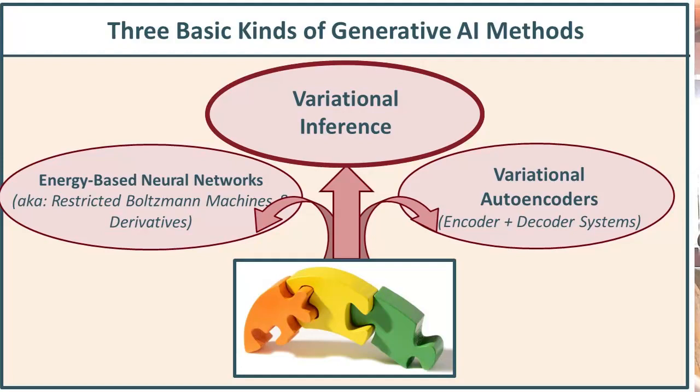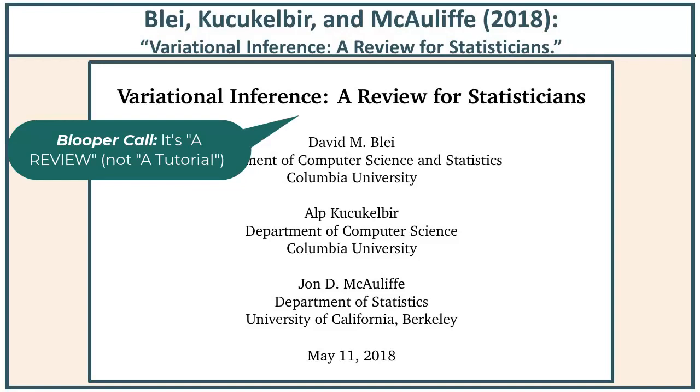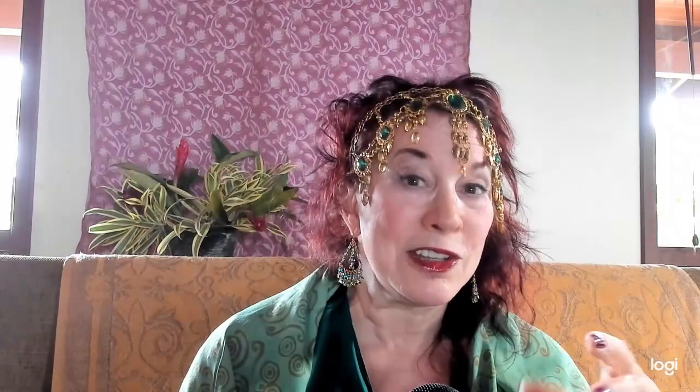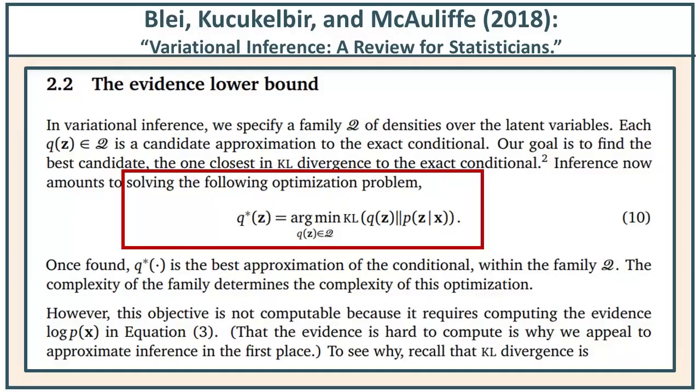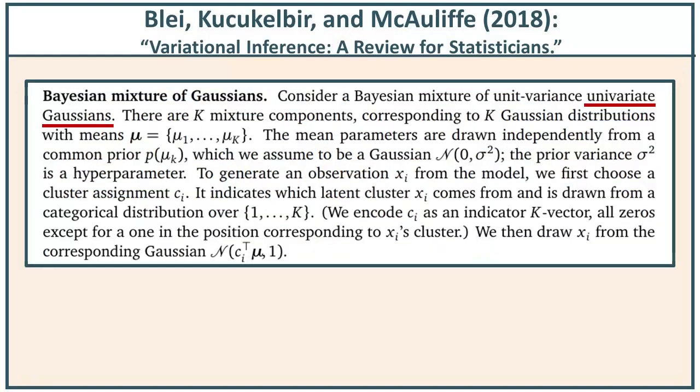The next one is variational inference. One of the most prominent researchers there is David Blei, who wrote with Kucukelbir and McAuliffe a really great tutorial entitled 'Variational Inference: A Tutorial for Statisticians' — meaning you need to know a little something before you walk into that room, but it is really pretty readable. The notion of variational inference is that you have a latent space, and you are going to model that latent space with a model from the exponential family — for example, a Gaussian or a set of Gaussians.